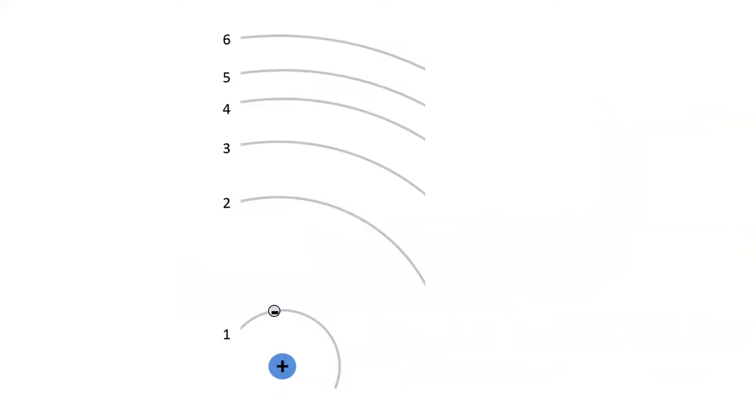In this animation, we will start with a hydrogen atom in the ground state. Its single electron is in the lowest energy level, energy level one. Now, let's say this atom is hit with an electric charge that causes an electron to absorb enough energy to move up to the fifth energy level.